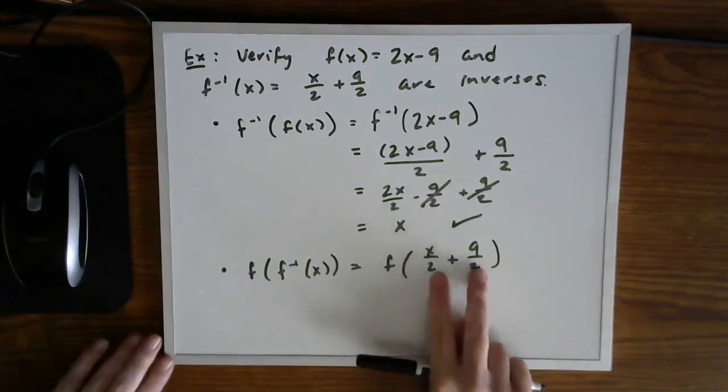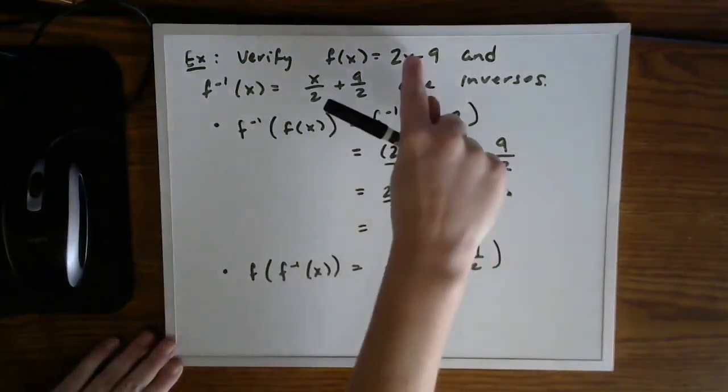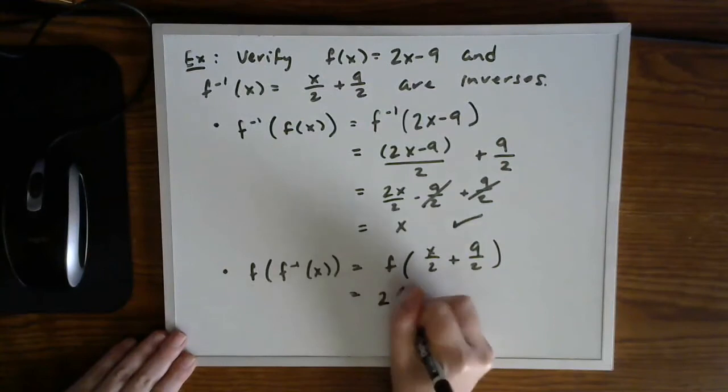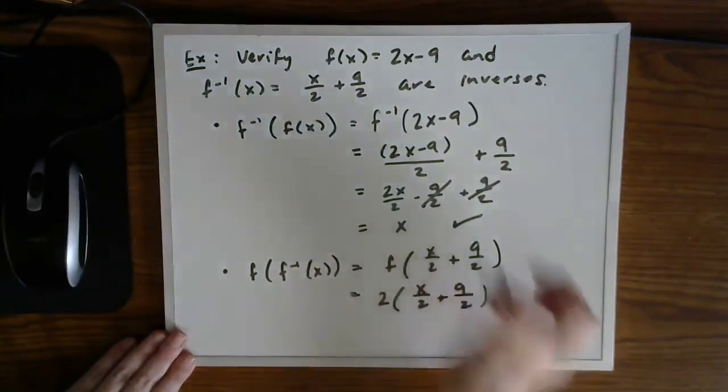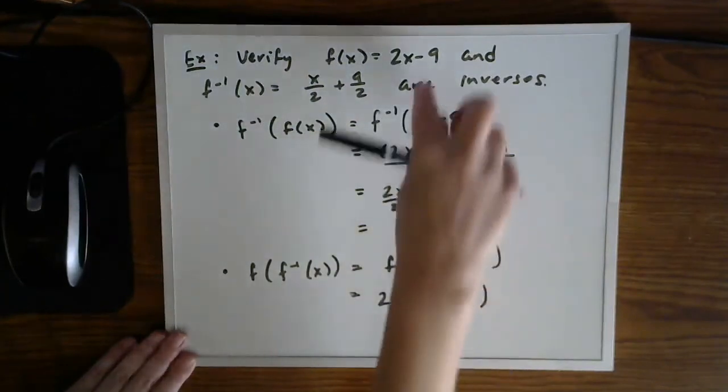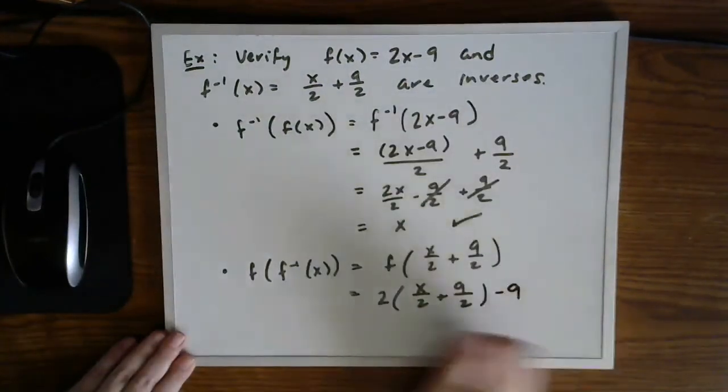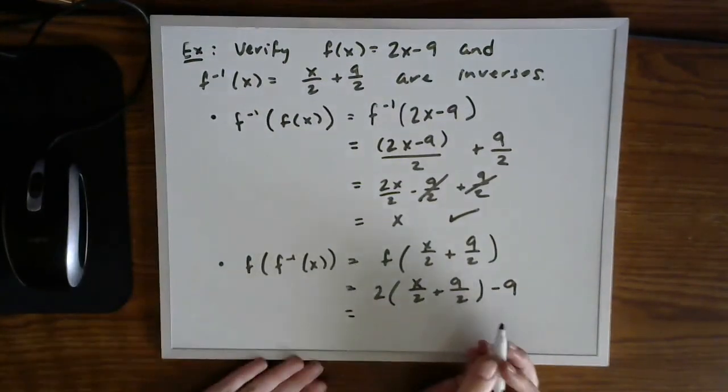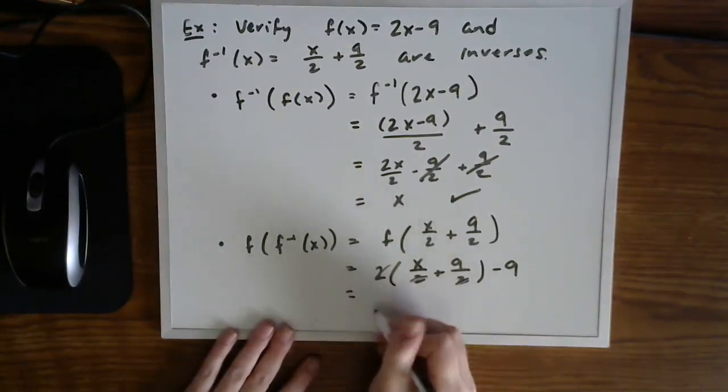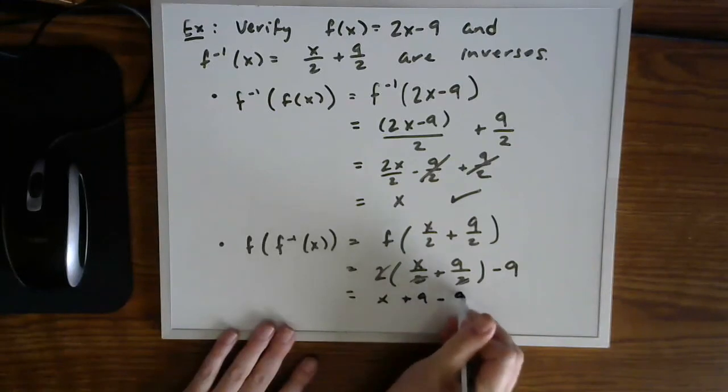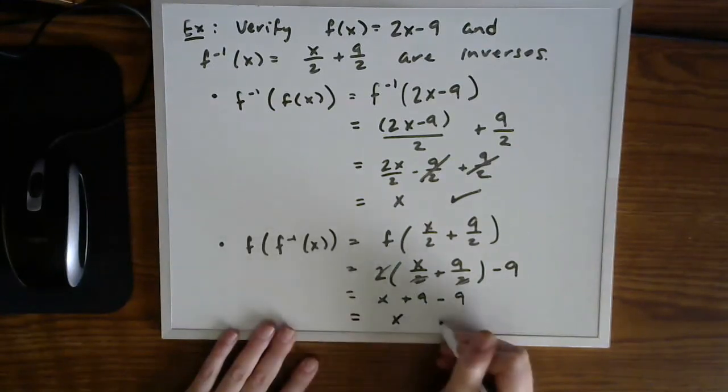Again, replace the inverse function in here. Then take this input and plug it into the original f function wherever you had the variable. So 2 times the thing minus 9.